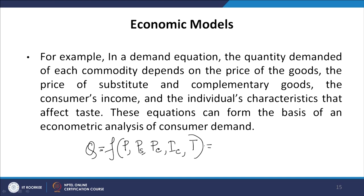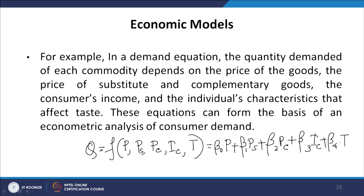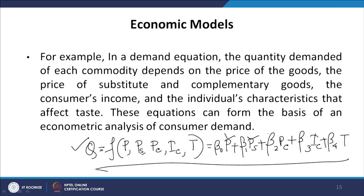For simplicity, if I expand it in a linear form, I can write demand for a particular product as depending on the price of its own, the price of its substitute commodity, the price of its complementary good, the income of the consumer, and finally taste and preferences. Once I have a specific form, this is a measurable concept. Given the demand for the product and information on these variables, I can always try to find out the parameter estimates, which will tell us which factor is more important, which is impacting demand, and which is not.